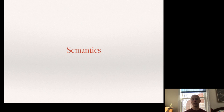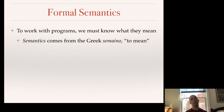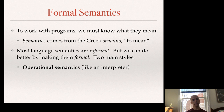The next category is semantics — in particular, formal semantics. Because PL researchers are interested in working with whole classes of programs, it's important to know what those programs mean. The word semantics comes from the Greek word meaning 'to mean.' Most language semantics, even today, are informal — text documents that explain in legalistic style what a language construct should do when executed. But we can do better in PL research by making semantics formal, that is mathematical, rather than informal. There are two main styles: operational semantics, which is like an interpreter written in math, and denotational semantics, which is like a compiler that translates a program to mathematics.